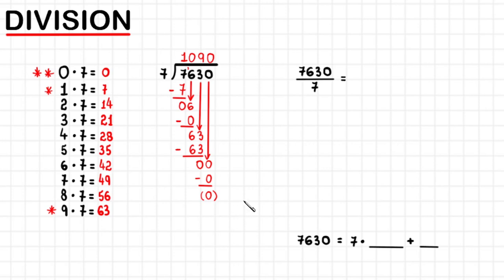So in this division, the quotient is 1090 and the remainder is 0. I'm going to copy that right here. The quotient is 1090 and the remainder is 0.